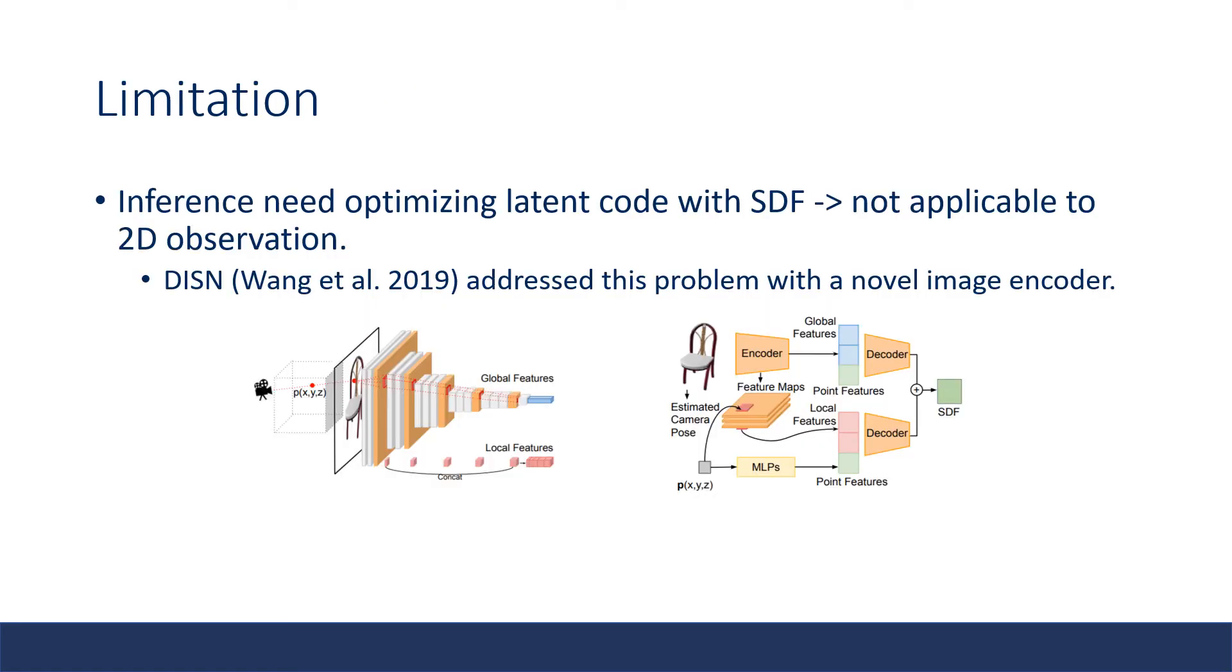One limitation of this work is that inference needs optimizing latent code with SDF. This is not applicable to 2D observations. A later work called Disn addressed this problem with a novel image encoder.